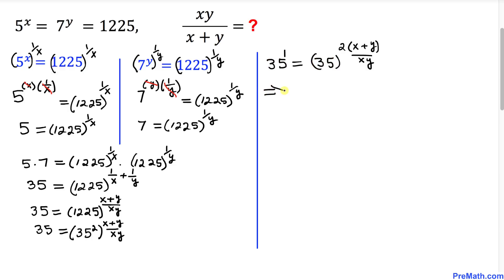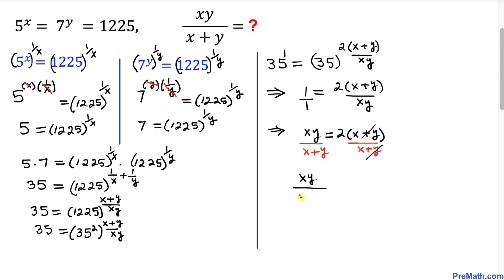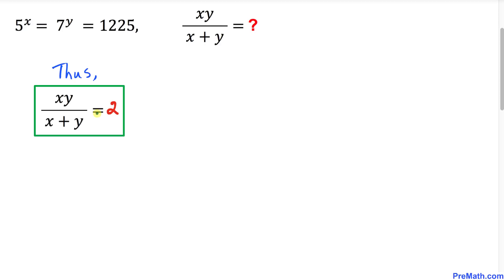So we get 1 equals 2 times (x plus y) divided by xy. Writing 1 as 1 over 1 and cross multiplying gives xy equals 2 times (x plus y). Dividing both sides by x plus y, the (x plus y) terms cancel, and we get xy divided by (x plus y) equals 2. This is the value we wanted, so xy divided by x plus y equals 2. Thanks for watching, and please don't forget to subscribe to my channel for more exciting videos.